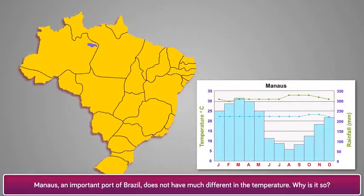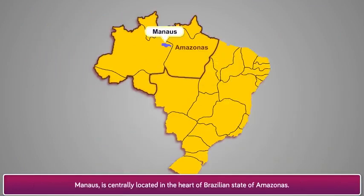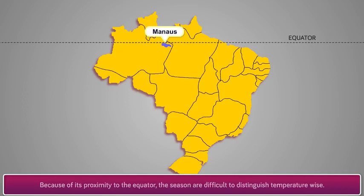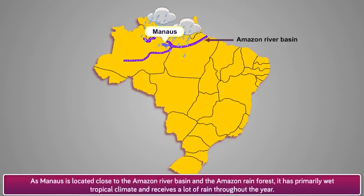Manaus, an important port of Brazil, does not have much difference in temperature. Why is it so? Reason 1: Manaus is centrally located in the heart of the Brazilian state of Amazonas. Reason 2: Because of its proximity to the equator, the seasons are difficult to distinguish temperature-wise. Reason 3: Manaus is located close to the Amazon River basin and the Amazon rainforest. It has a primarily wet tropical climate and receives a lot of rain throughout the year.